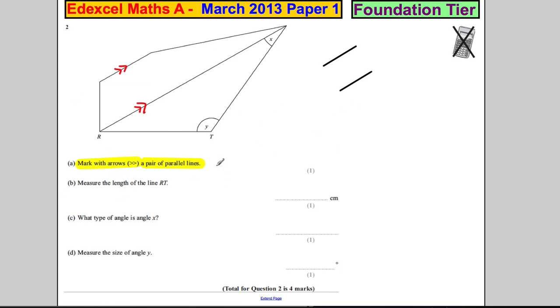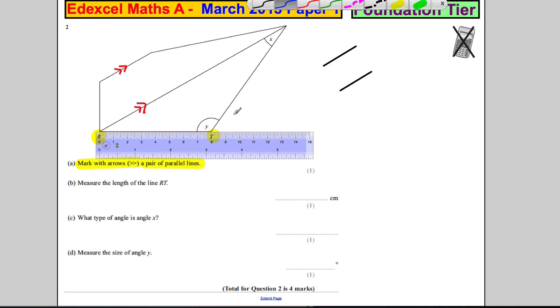Then we're asked to measure the length of RT. So let's label R to T, is R here to T here, and we have to measure that length. So all we've got to do is make sure we have the ruler in the exam and get the ruler out and let's measure it. Putting zero on the ruler, make sure it's zero and not here. A little mistake that you can do under pressure in the exam. Put the zero here and we're measuring that and it's about eight centimeters. Okay, so be as accurate as you can but here it's eight centimeters so I'm going to write eight for that.